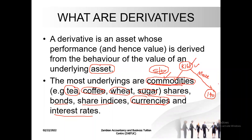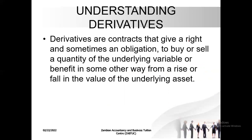You can cover this transaction by using relevant derivatives which have been created. Some clever people have created contracts which reflect what is happening underneath. And although you're not a farmer, you can participate by buying and selling these instruments. Derivatives are contracts that give a right and sometimes an obligation — like futures create an obligation — to buy or sell a quantity of the underlying variable, or benefit in some other way from a rise or fall in the value of the underlying asset.